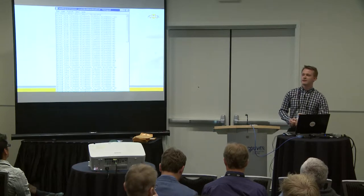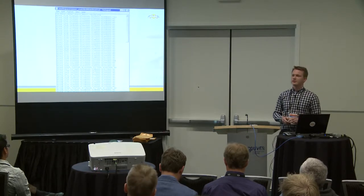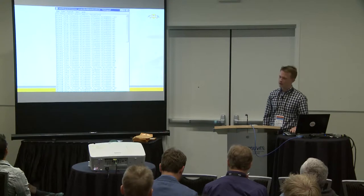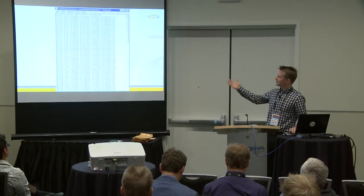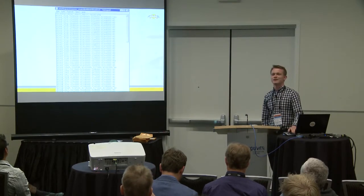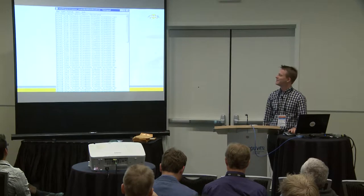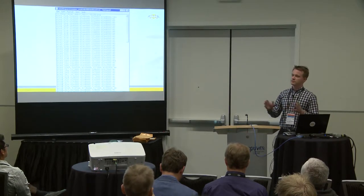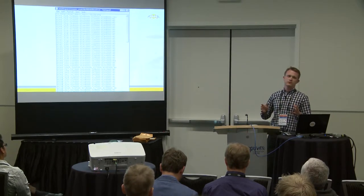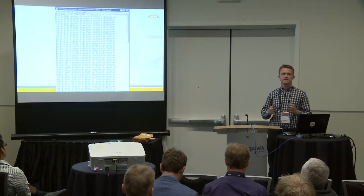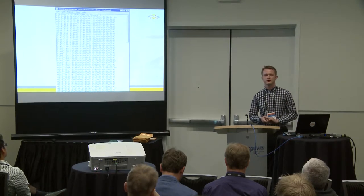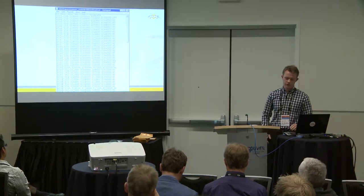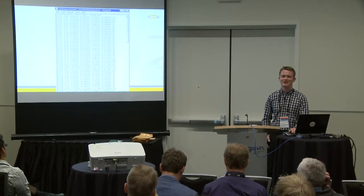Cadastral data is very important — everybody uses it more or less. So this text file represents many hours of work, because in the rural areas the grid squares are 4 by 4 kilometers, but in the city it's 250 by 250 meters. So it has taken a lot of time to get it right.